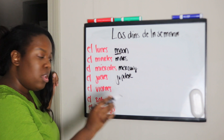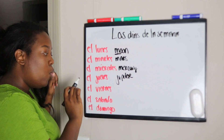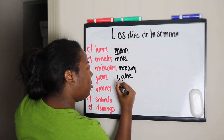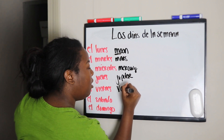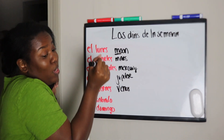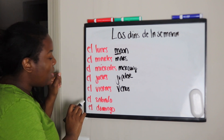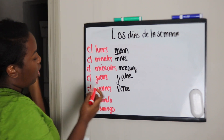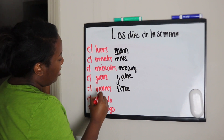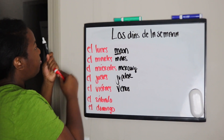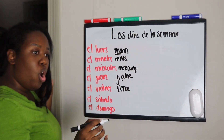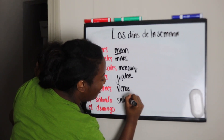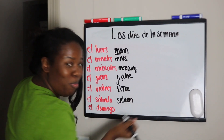El viernes — what starts with a V? Venus! Or, you know, we got Venus Williams. Okay, next, we got el sábado. This needs an accent mark because you put emphasis on it. Sábado — what we got, boo? Saturn! Quit playing with Saturn. Don't do Saturn. Don't do my girl like that.